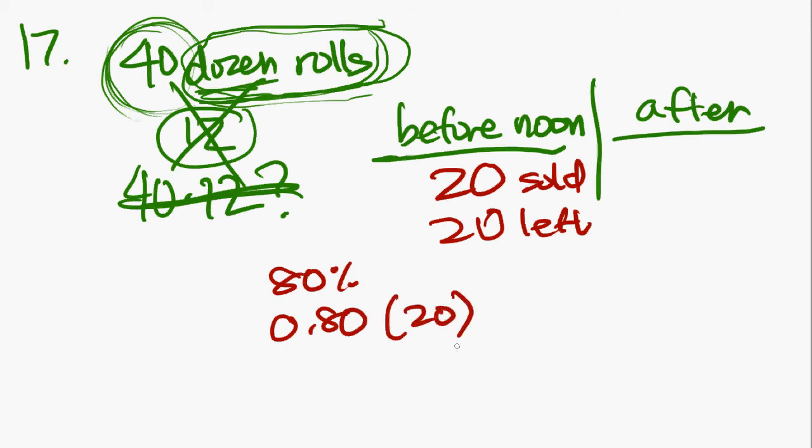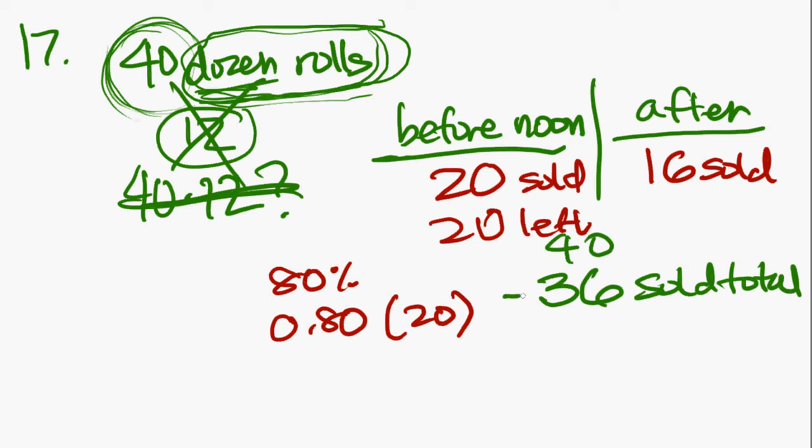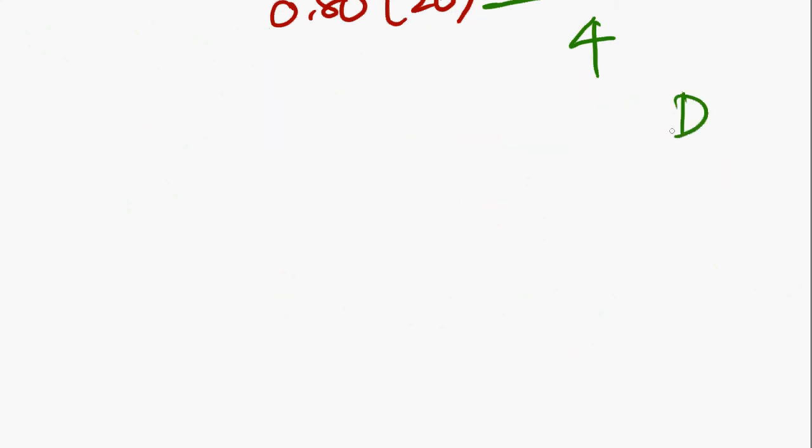And what does that come out to? That comes out to, let's see, 2 times 8, 16. That comes out to 16 sold after. Now, remember what the question is actually asking. It's not asking how many are sold after. It's asking for the entire day, the amount sold, how many were left unsold. So we know that they sold 20 before noon and 16 after noon. You add those up and you get 36 sold total. Now they started off with 40. They ended up selling 36. So you subtract that and you get 4. And 4 is D.